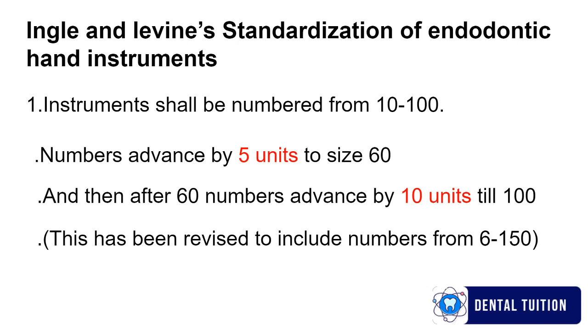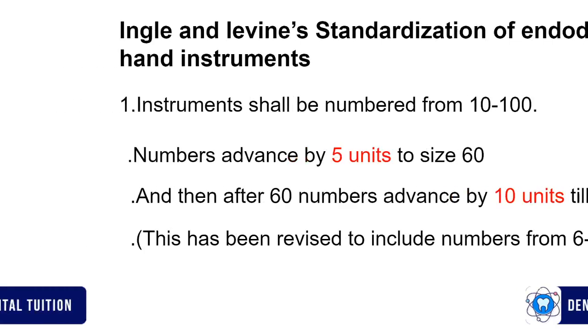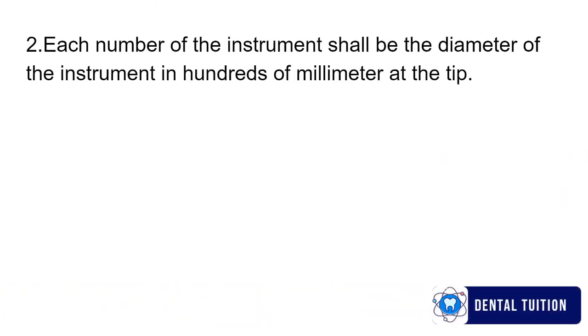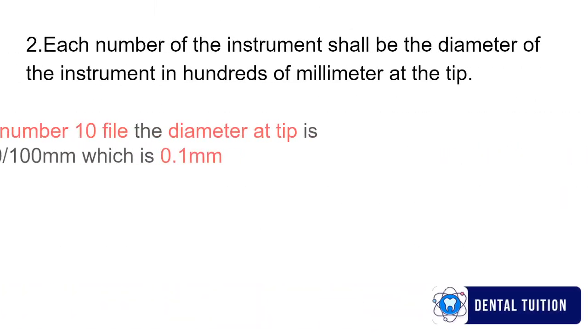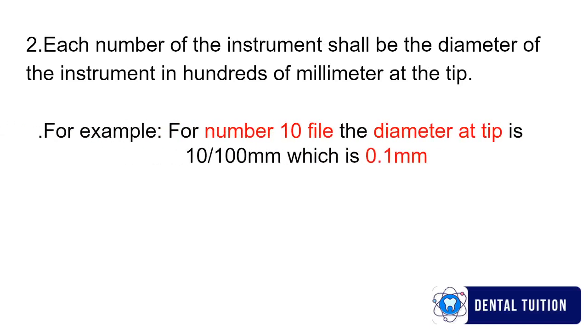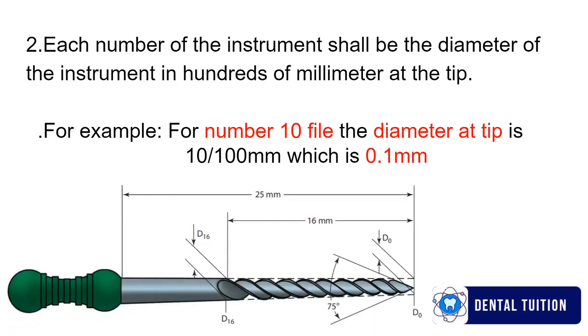Now coming towards another recommendation, each number of the instrument shall be the diameter of the instrument in hundreds of millimeter at the tip of the instrument. For example, in number 10 file the diameter at the tip is 10 by 100 which is 0.1 millimeter. In the given figure you can appreciate the tip of the instrument.